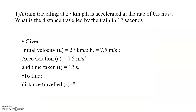First problem: a train traveling at 27 km/h is accelerated at the rate of 0.5 m/s². What is the distance traveled by the train in 12 seconds? Given data: initial velocity u = 27 km/h, which we convert to SI units in m/s. Acceleration a = 0.5 m/s², time taken t = 12 seconds. We need to find distance traveled s.